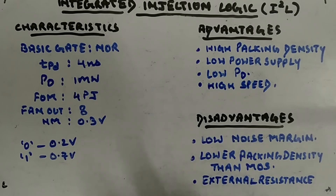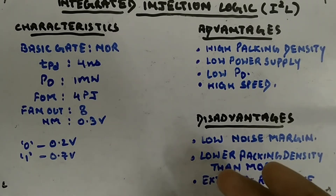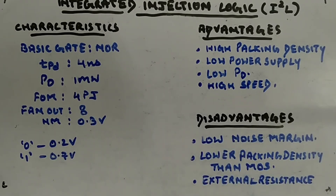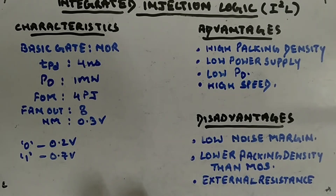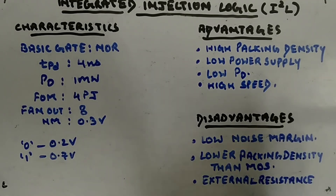That covers everything about I²L. Now we will move to TTL — transistor-transistor logic — which is the most popular type of logic family. It is the only remaining saturated-type logic family we need to cover, after which we will move to non-saturated ones.